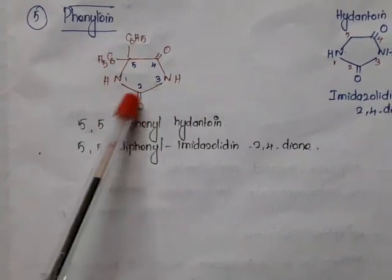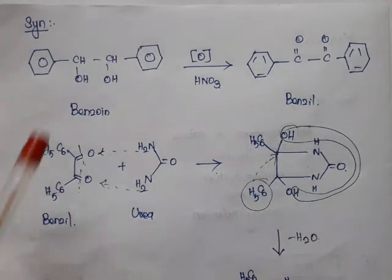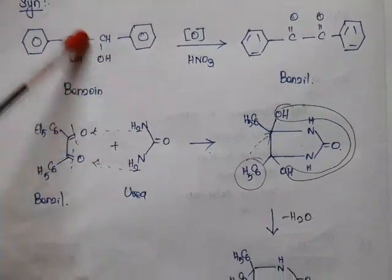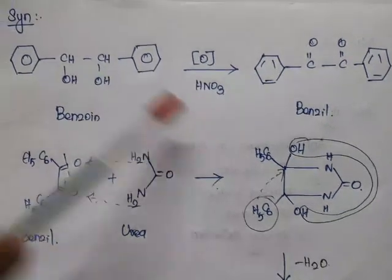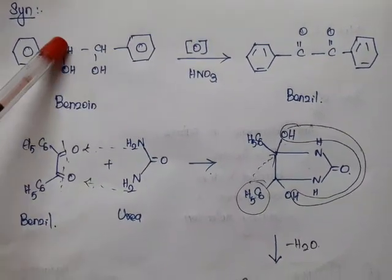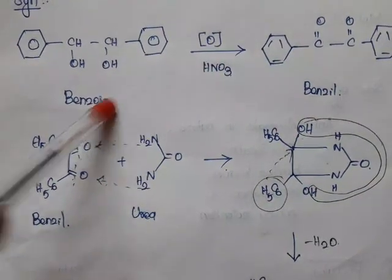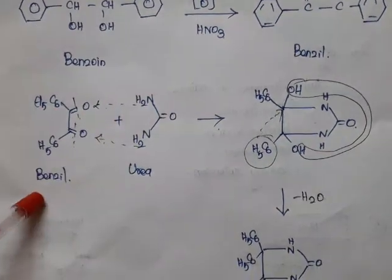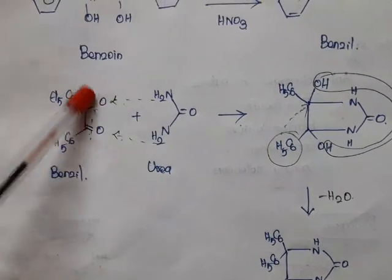For the synthesis of phenytoin, the starting material is benzoin, which has a phenyl ring on each side with a CHOH group in the center — making it a secondary alcohol. On oxidation with nitric acid, the secondary alcohol groups are converted to ketones, giving benzil. Benzil is then treated with urea.